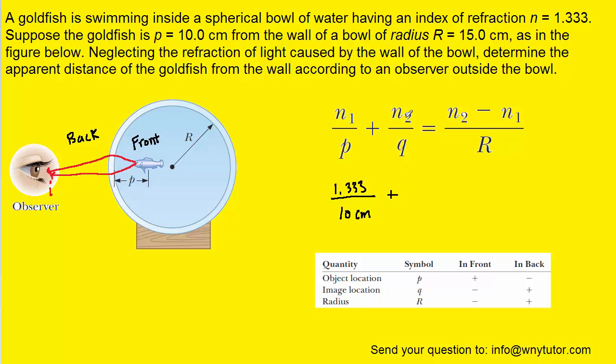We then come to n2, which is going to be the index of refraction of the region that's outside of the bowl. And that presumably is just air. So the index of refraction of air is approximately 1. Q is going to be the image distance. And that is actually what we're looking for. So for now, we're just going to leave that as our unknown.